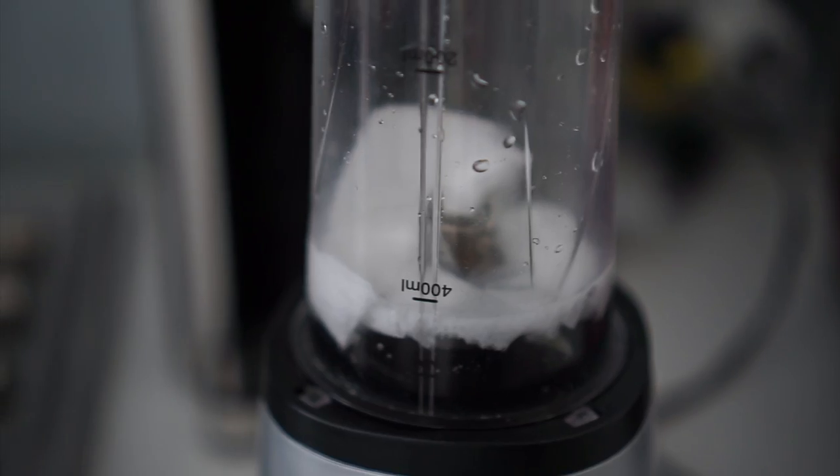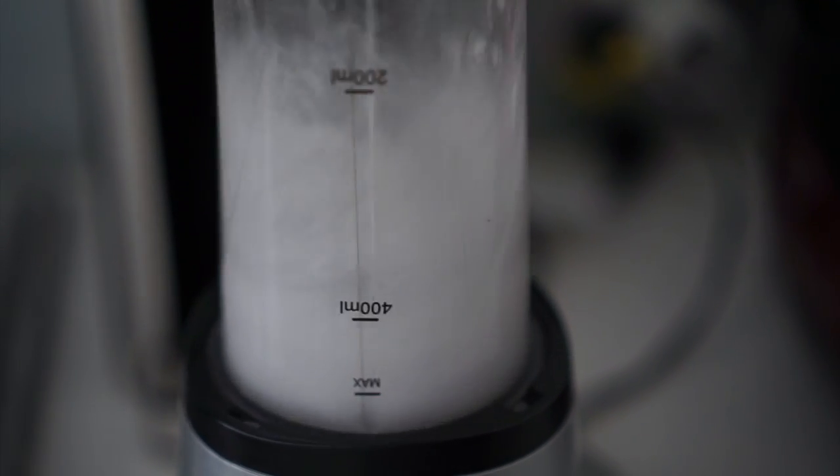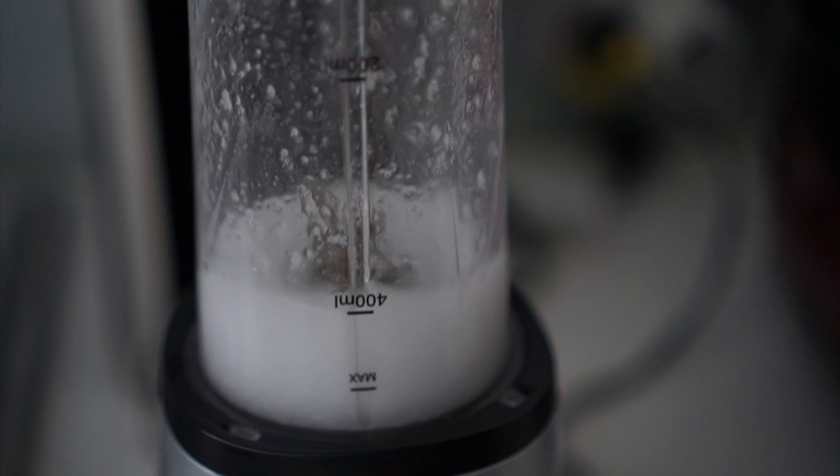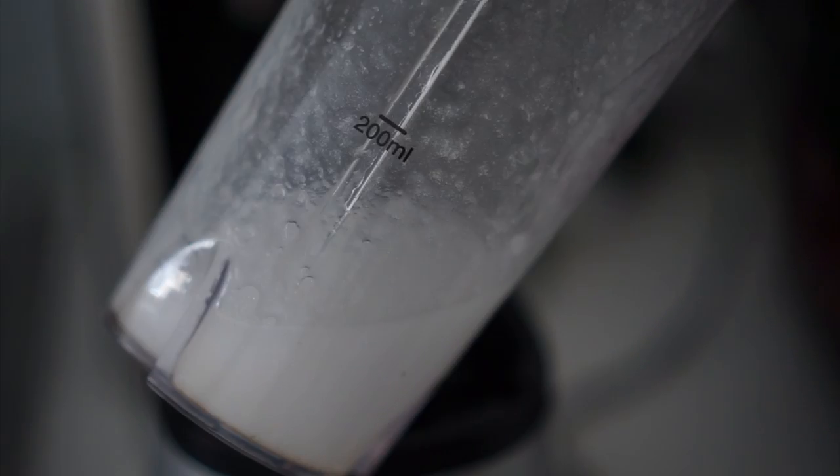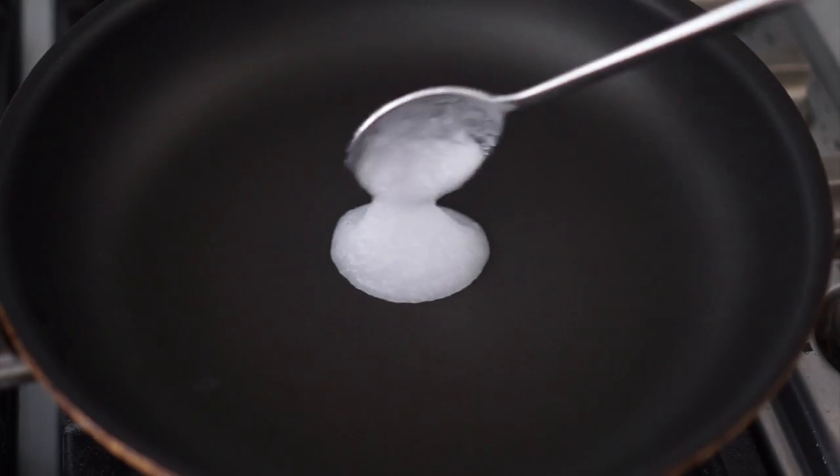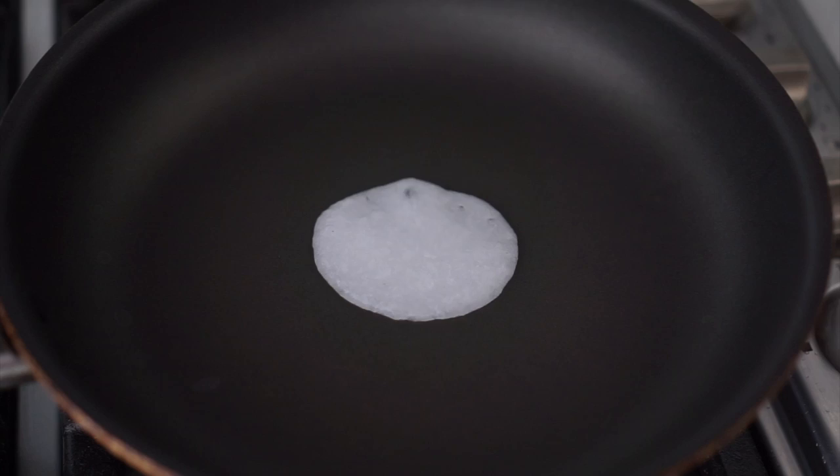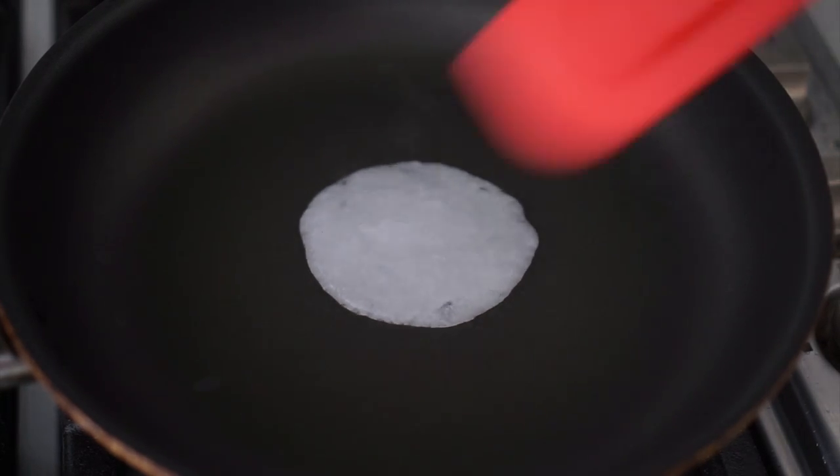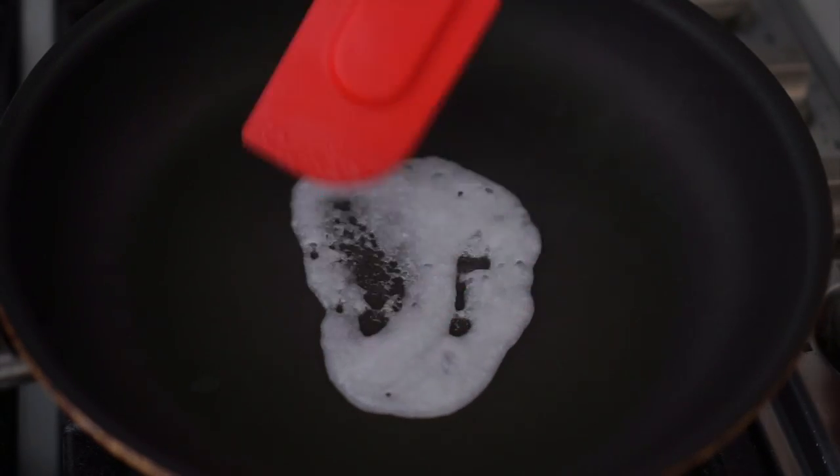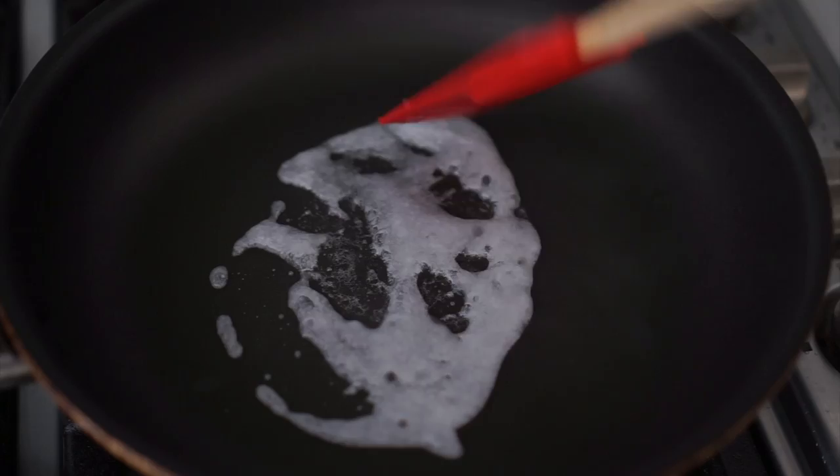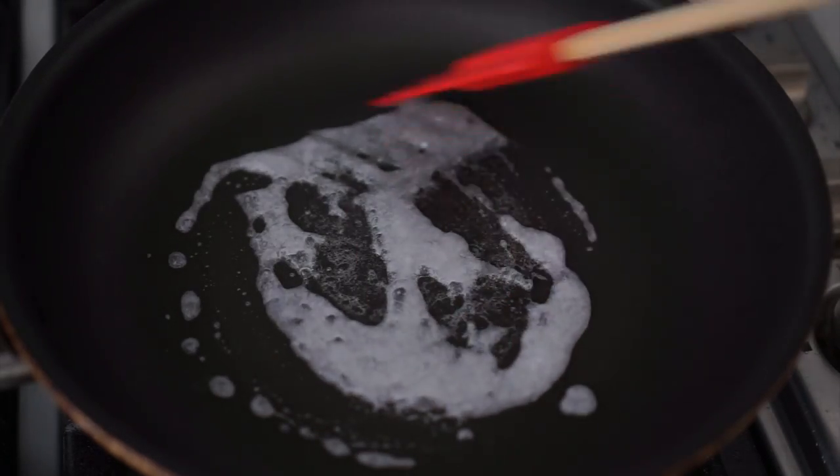To make the wafer paper lace, I mix two sheets of wafer paper with 200g of water and blend them together. Then I fry the dough on medium heat using only two spoons for each lace piece. Spread the dough evenly with a spatula and let it dry.